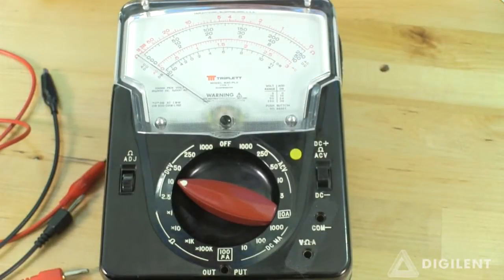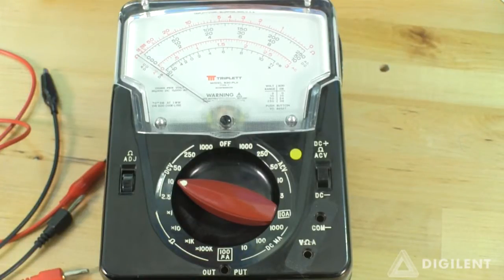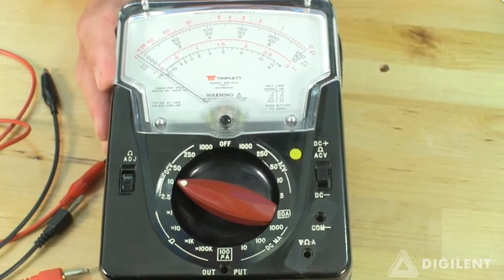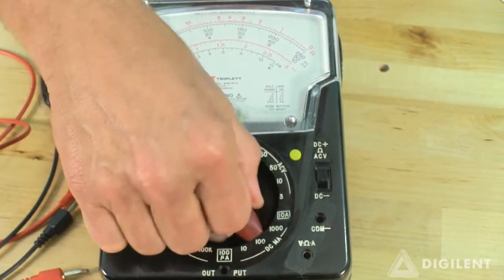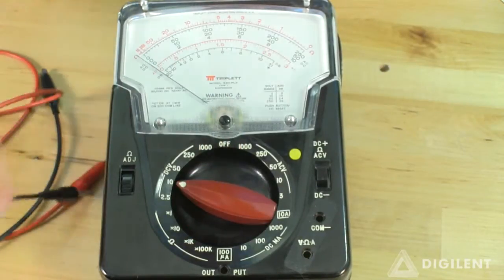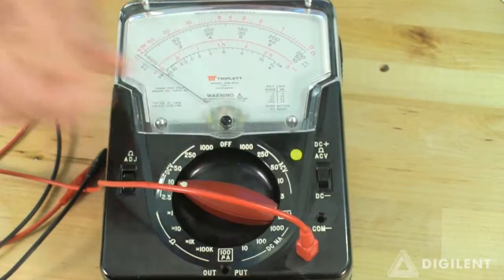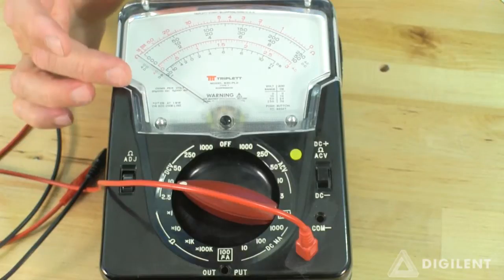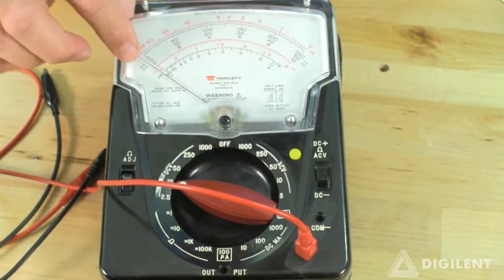The basic operation of multimeters hasn't changed much since multimeters originated. There are some variations though. This is a really old handheld analog multimeter. Like the digital version, it has a dial to select various functions and ports to plug probes into. Instead of a digital display though, there's an analog needle which indicates the measured value.